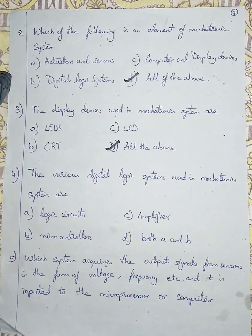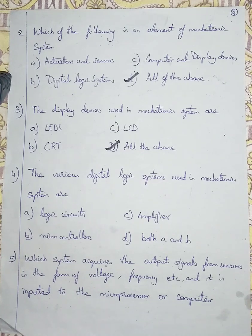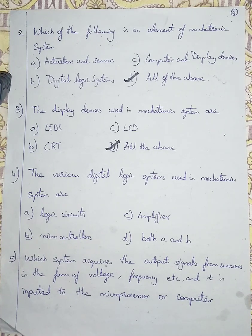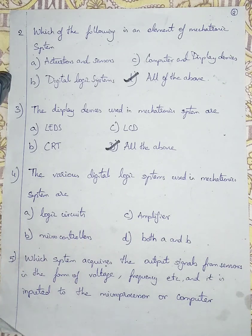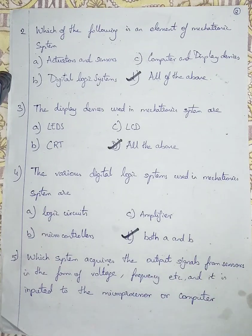Question number 4: The various digital logic systems used in mechatronics systems are. Option A is logic circuits. Option B is microcontrollers. Option C is amplifiers. Option D is both A and B. Logic circuits and microcontrollers control the overall systems in mechatronics. An amplifier doesn't control any system — it just amplifies the signal, increasing its intensity or frequency. So I am going with option D, both A and B: logic circuits and microcontrollers.